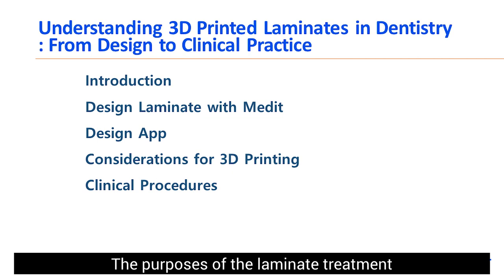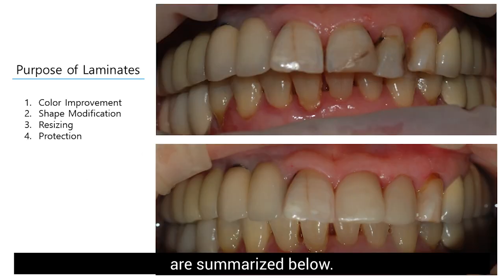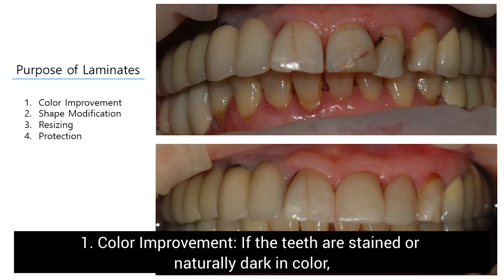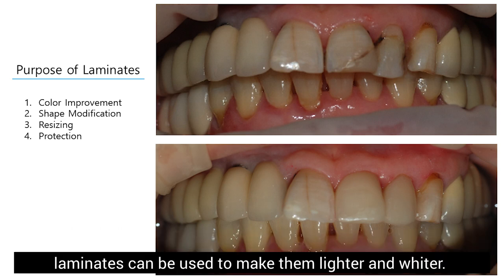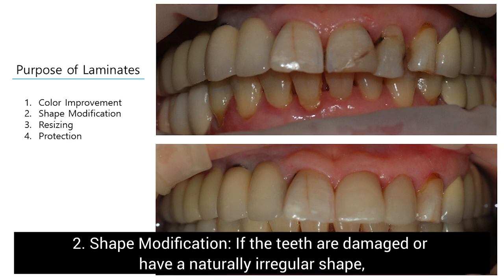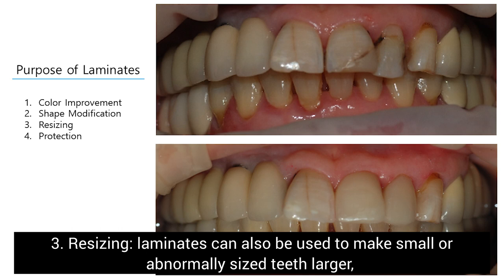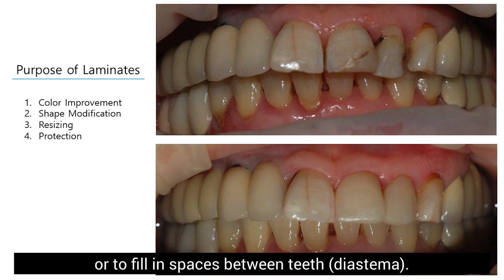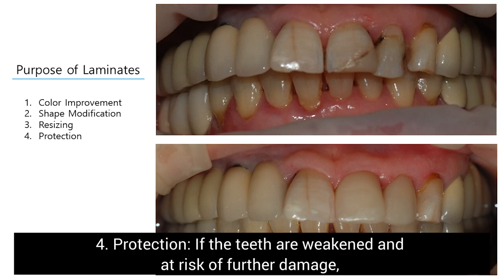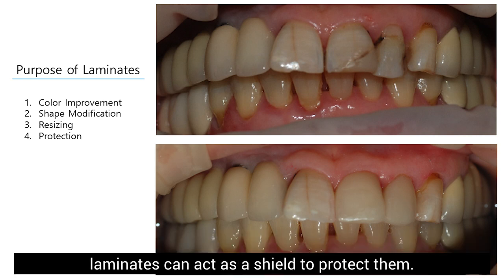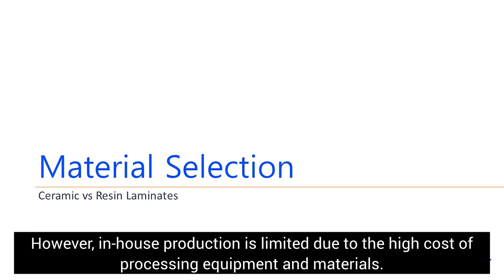The purposes of laminate treatment are summarized below. First, color improvement: if the teeth are stained or naturally dark in color, laminates can be used to make them lighter. Second, shape modification: if the teeth are damaged or have a naturally irregular shape, laminates can complement or improve the shape. Third, resizing: laminates can make small or abnormally sized teeth larger or fill in spaces between teeth. Fourth, protection: if the teeth are weakened and at risk of further damage, laminates can act as a shield to protect them.